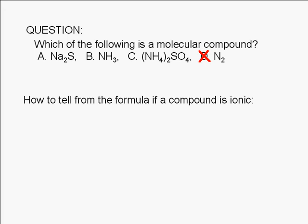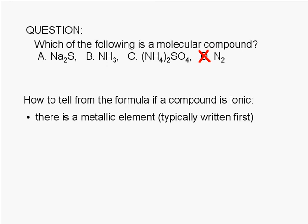We can easily tell from the formula of a compound if it's ionic. Most cations are derived from metallic elements, so the first thing we need to look for is the symbol for a metallic element. It's usually the first one written. If there is one, then we can say that the compound is ionic.